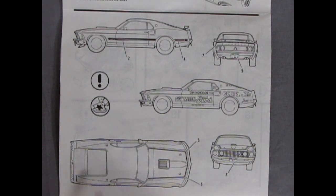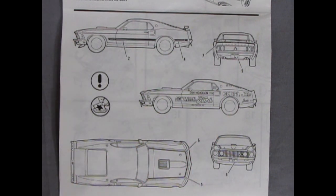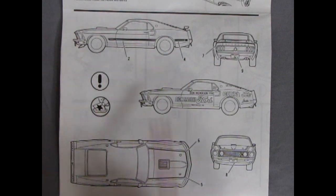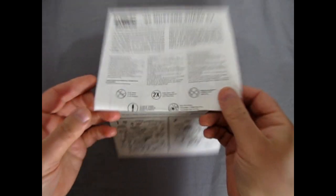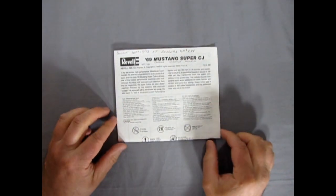And I like these views because you could scan these into your computer, print them off, and then color them in with your pencil crayons. Or if that's too old tech, you can color this in the computer. And that completes our look at our '69 Mustang Super CJ instructions.